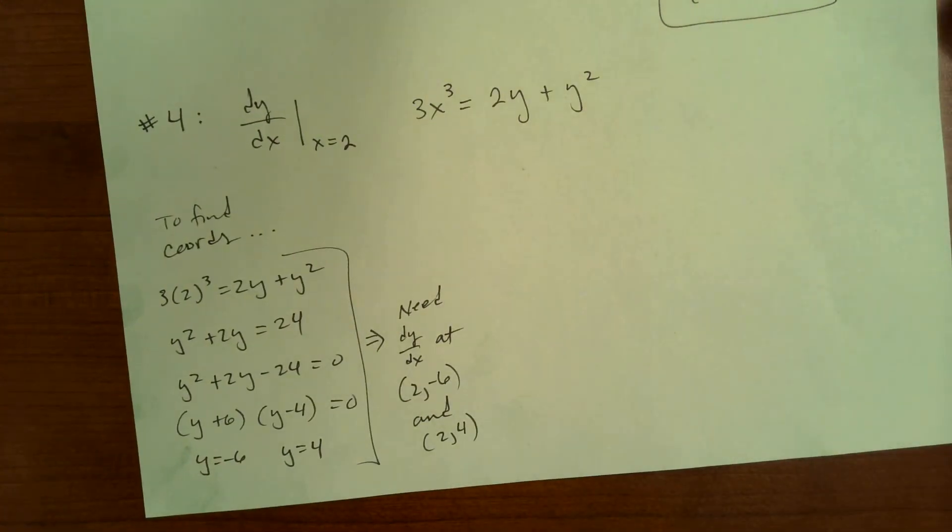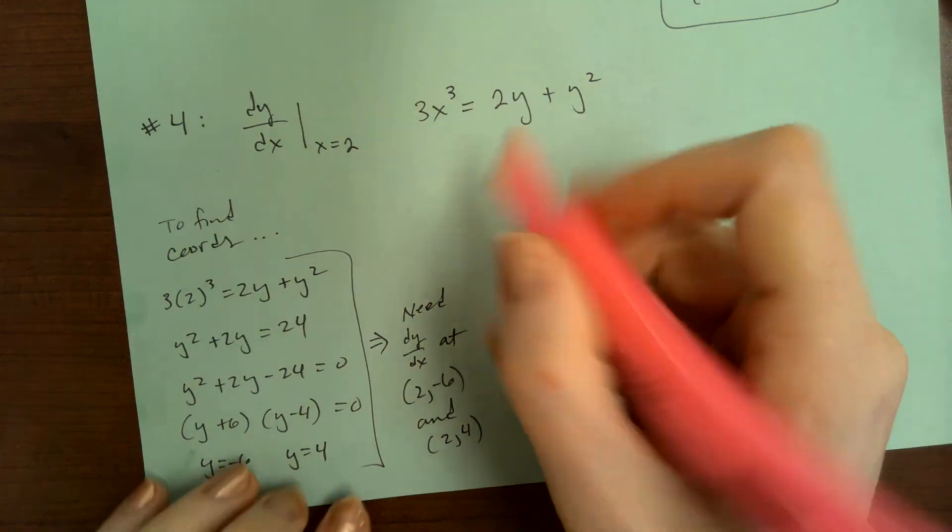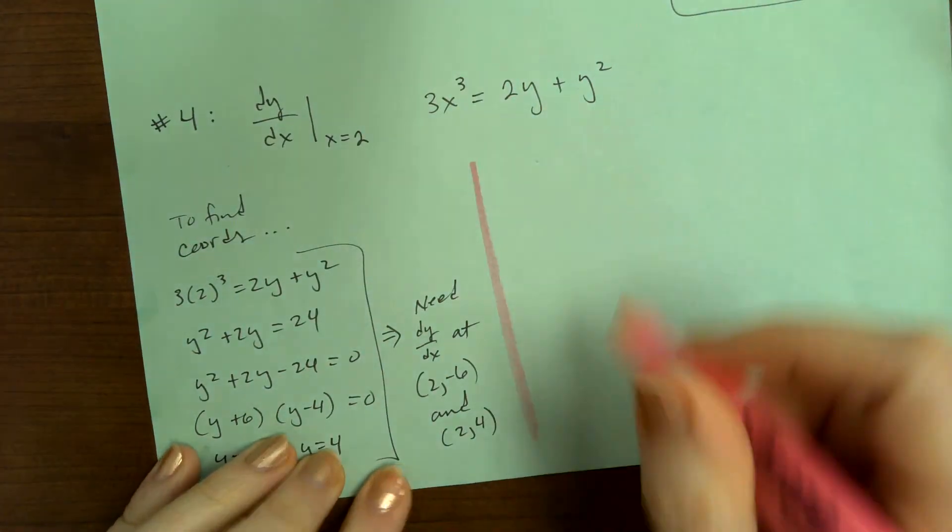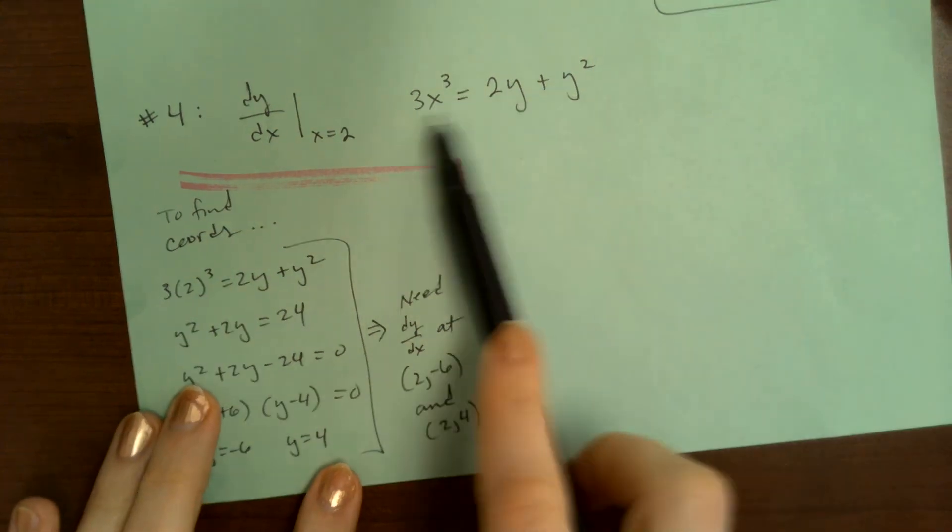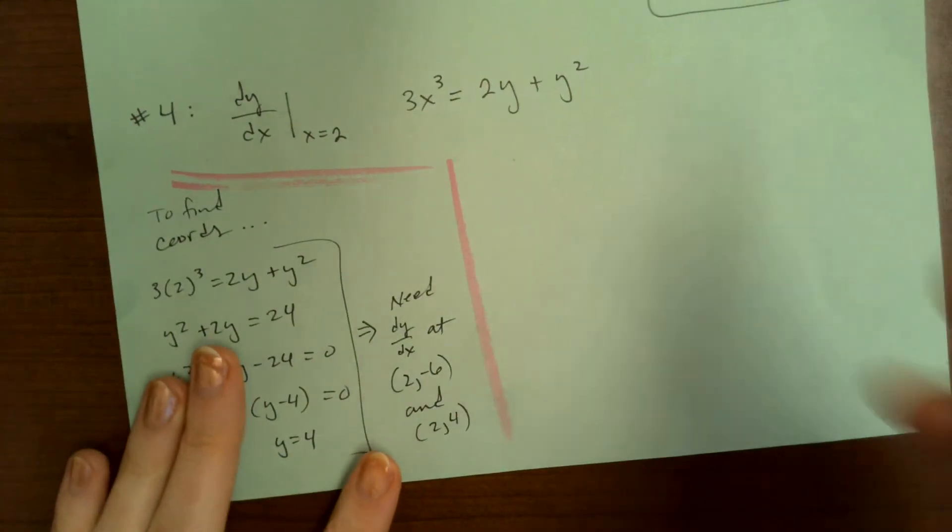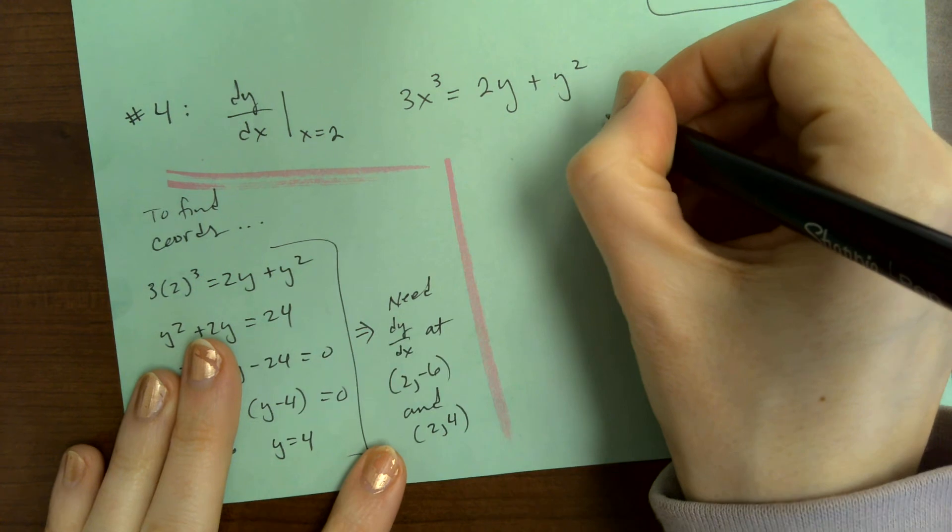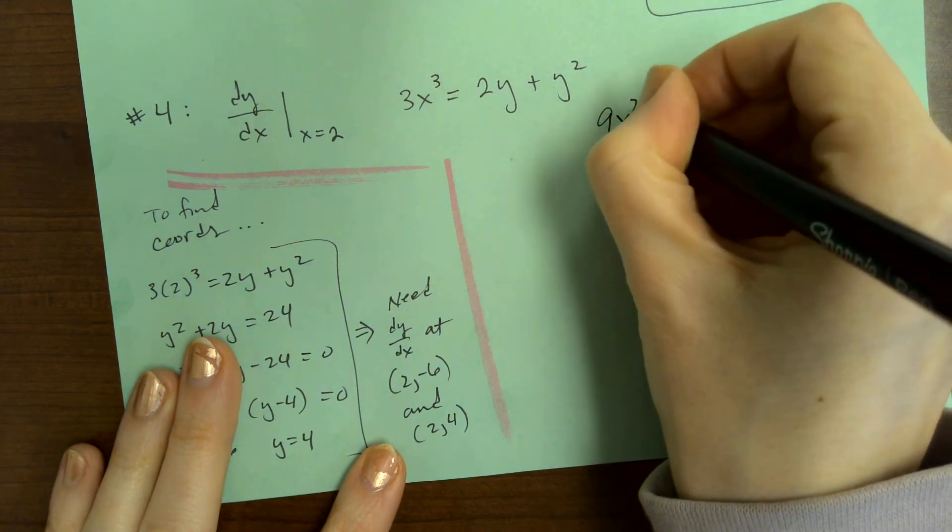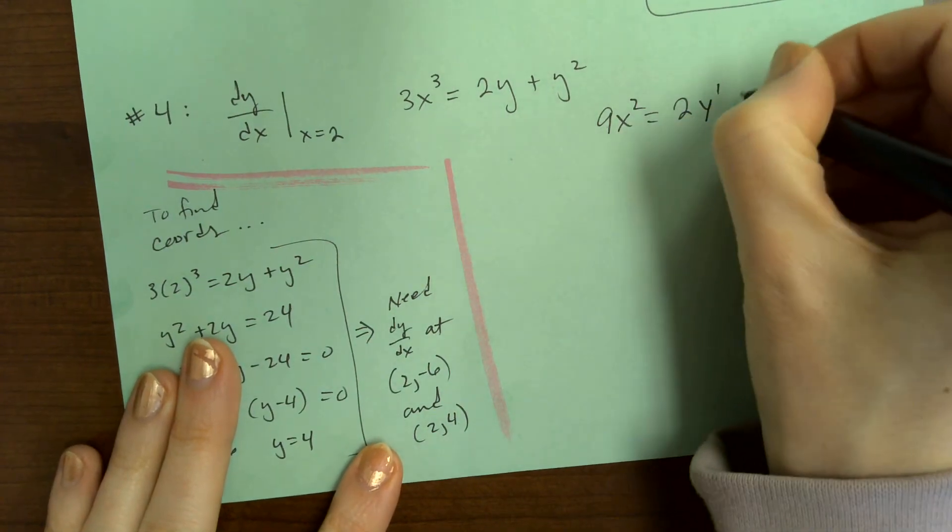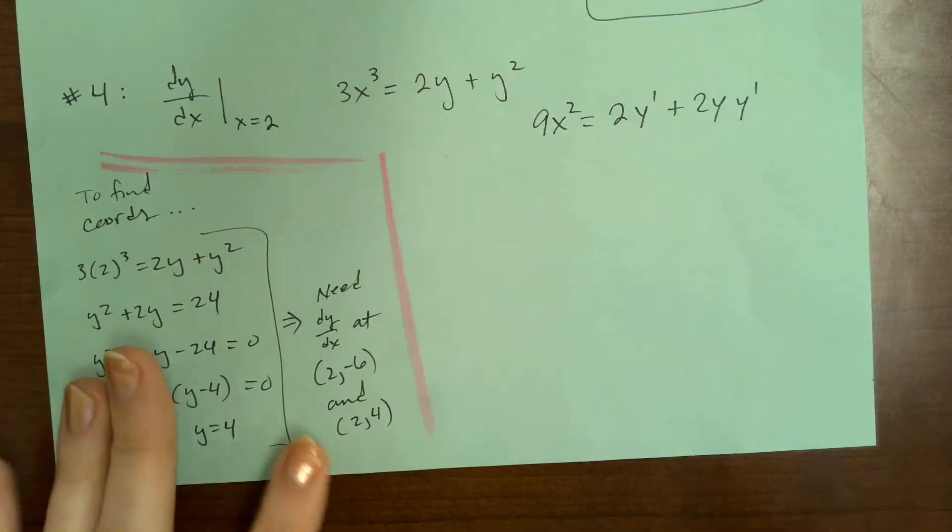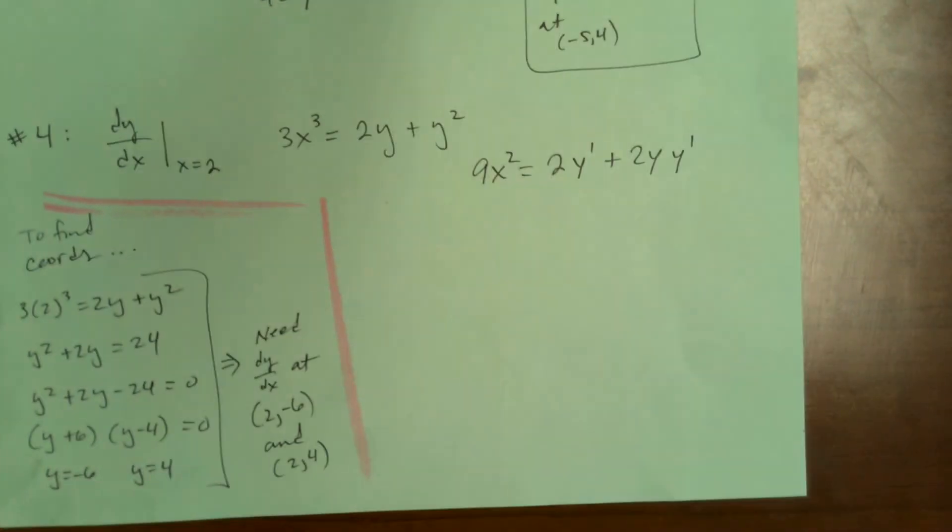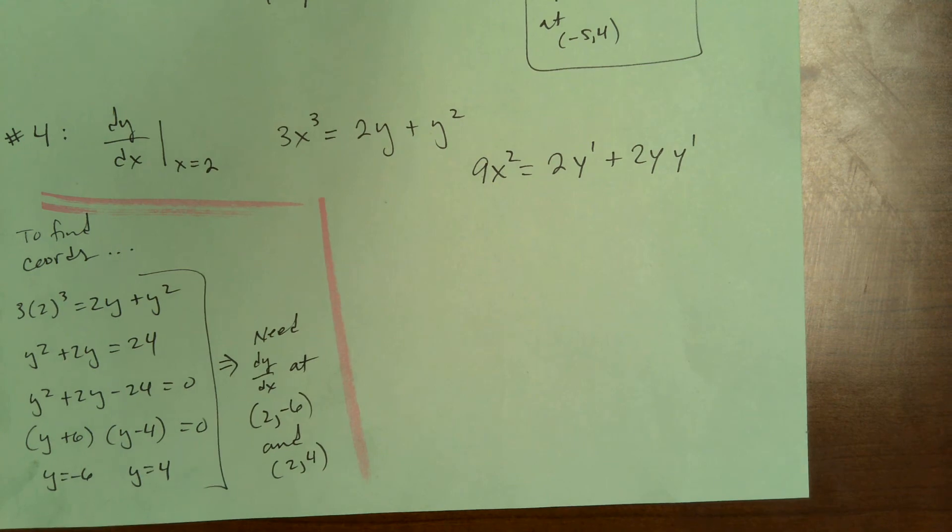Okay. Then you can start the calculus. So that's like an aside. So now taking the derivative of this, we get 9x squared equals 2y prime plus 2y y prime.